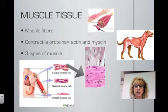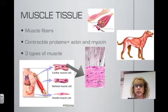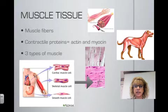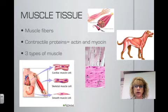Cardiac muscles are in the wall of the heart. They are striated and branched, and we only find cardiac muscle in the heart. The ends of the muscles have intercalated discs, which cause them to relay signals from one muscle cell to another in the heart.